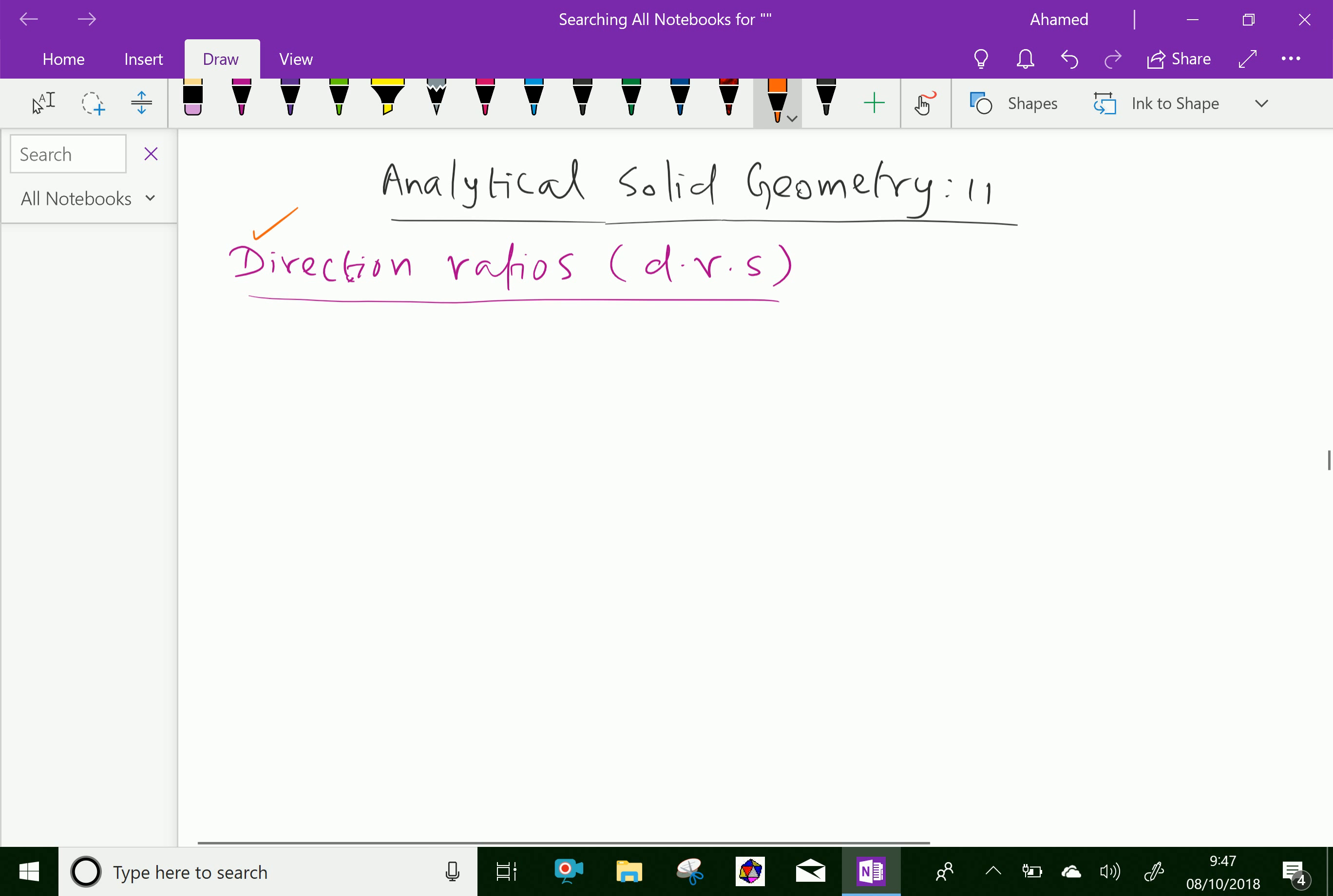So, if A, B, C be three numbers proportional to the actual DC, actual DC means direction cosine L, M, N of your line, then the numbers A, B, C are called direction ratios of the line.